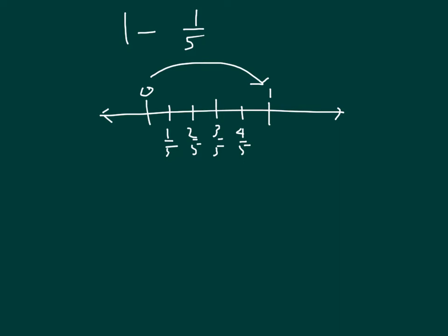We're at 1, we subtract 1 fifth, meaning we travel to the left on our number line, where we are subtracting 1 fifth. So our answer is 4 fifths.